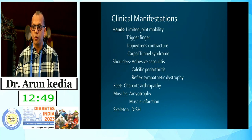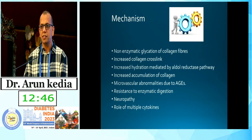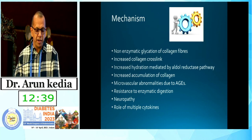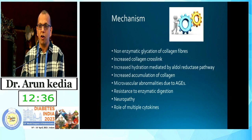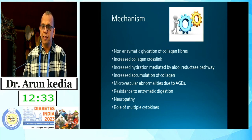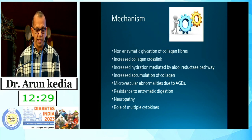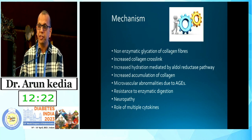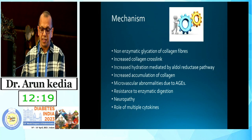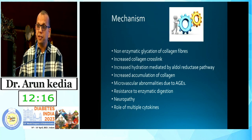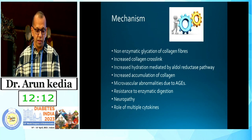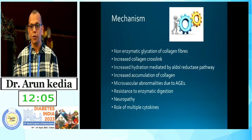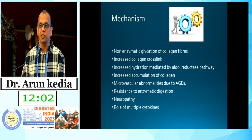Before going into each condition, a brief discussion on the mechanism: there is non-enzymatic glycation of collagen fibers due to accumulation of advanced glycation end products. There is increased collagen cross-linking, which leads to fibrosis. There is increased hydration mediated by the aldol reductase pathway. There is increased accumulation of abnormal collagen resistant to enzymatic digestion. There is associated neuropathy. And there are multiple cytokines, because diabetes is a chronic systemic inflammation, which play a role in causing these neuromuscular manifestations.